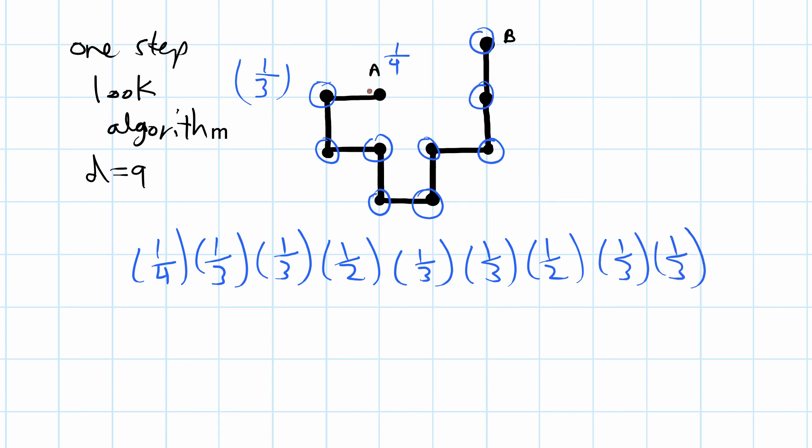So that would get us from point A to point B and this would be the probability of having this self-avoiding walk. When we do this multiplication, getting this self-avoiding walk of size 9 using the one-step-ahead algorithm would be a probability of 1 over 11,664. And that's it for this video.